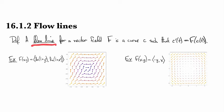A flow line for a vector field is going to be a curve C that has the property that the tangent to the curve at a given point is equal to the vector assigned to that point by the vector field F.